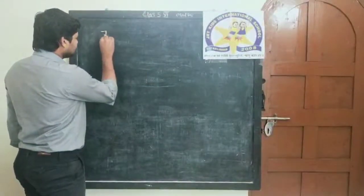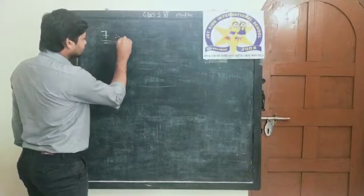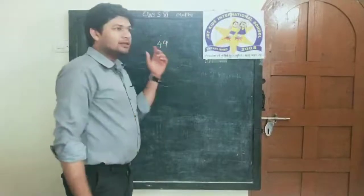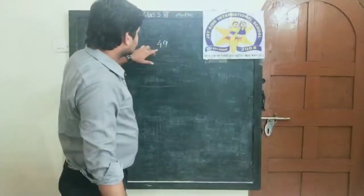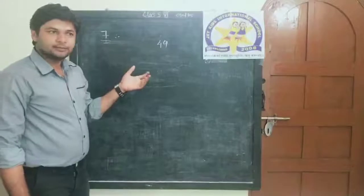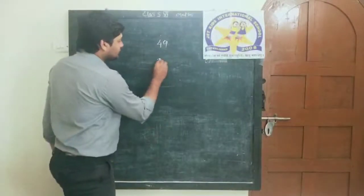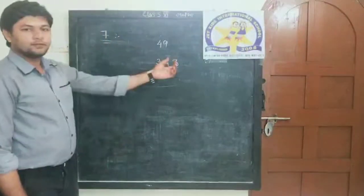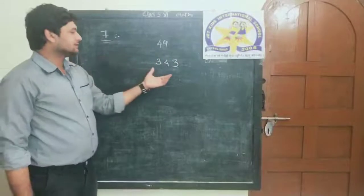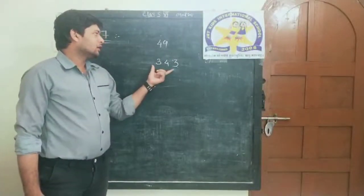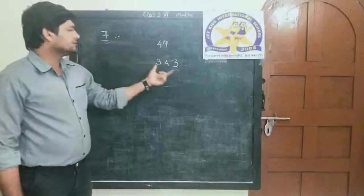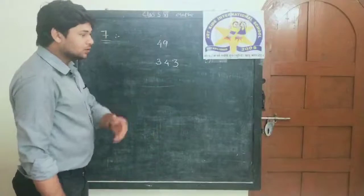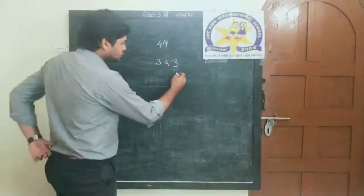Let us start with the divisibility test of 7. What is the divisibility test of 7? For example, 49 — you know very well that 49 is divisible by 7. But if I write 343, and you want to find out whether it is divisible by 7 or not, how are you going to find out? By dividing it? No. If you want to find it out directly, here is what you do.